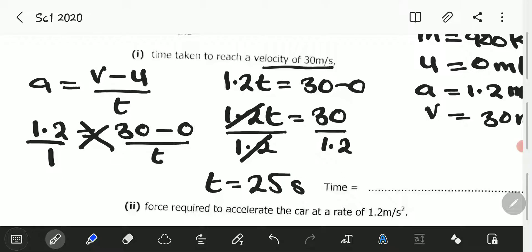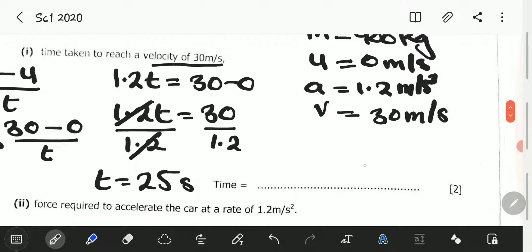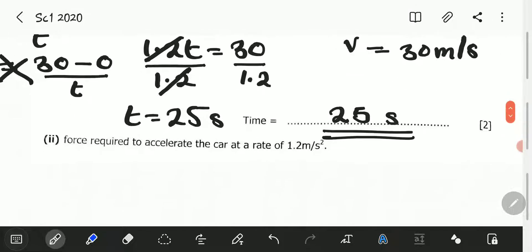We are going to now write in the space provided that our T is equal to 25 seconds. That is our time, 25 seconds.